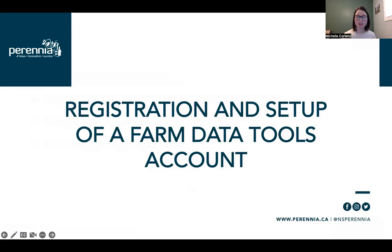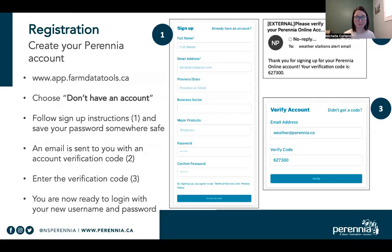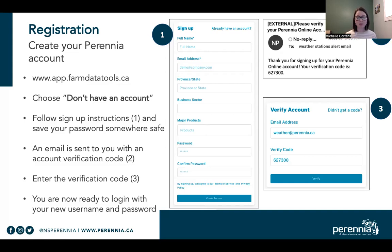Beginning with registration and setup. This farm data tools platform is on the internet, so you just need to visit the website www.app.farmdatatools.ca. That's where you're going to see the login page. Because this is your first time visiting, you're going to click on 'don't have an account.' That will bring you to the sign-up page, where you fill in your name, your email address, and the rest of the details.